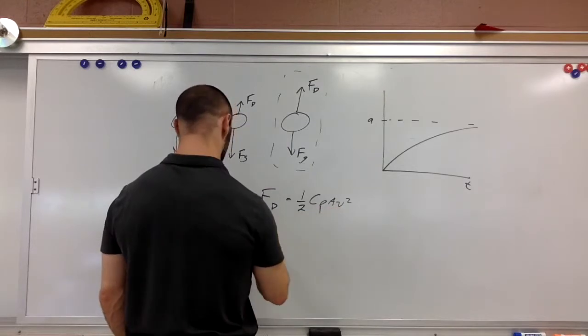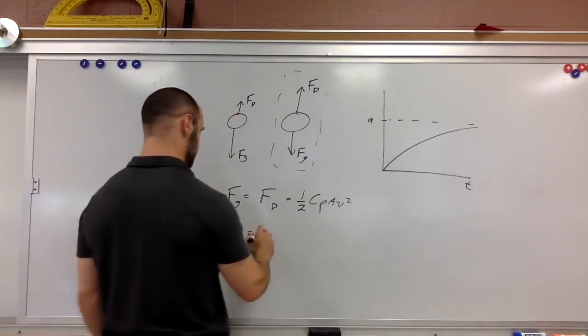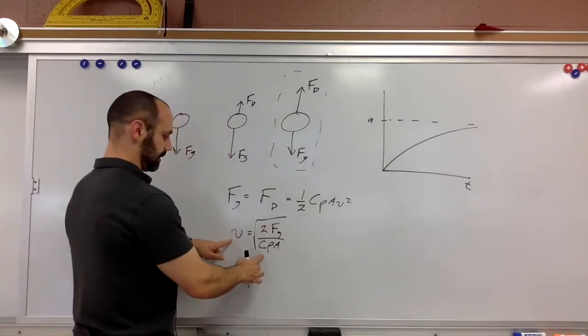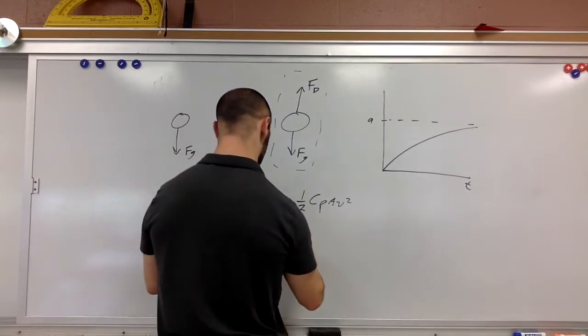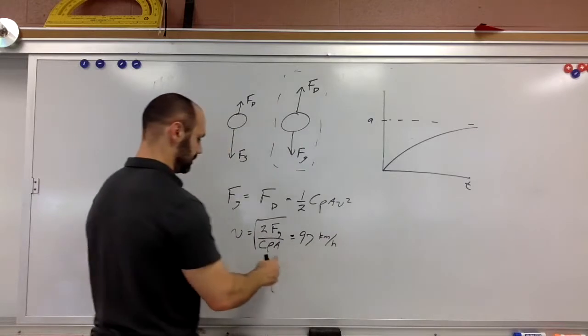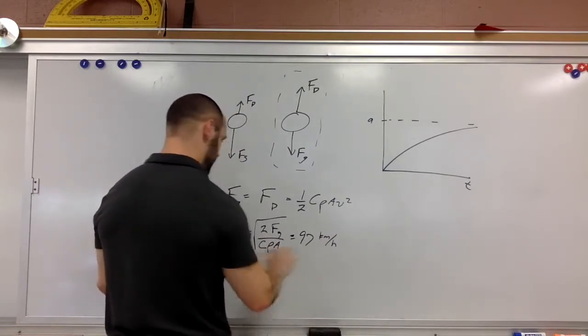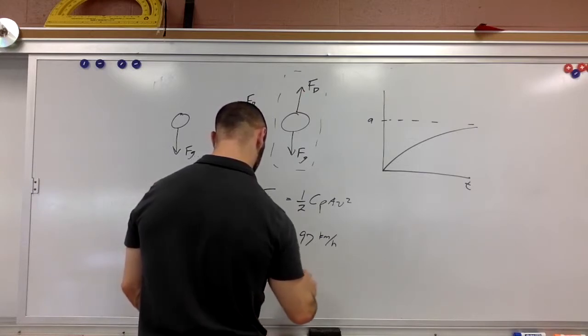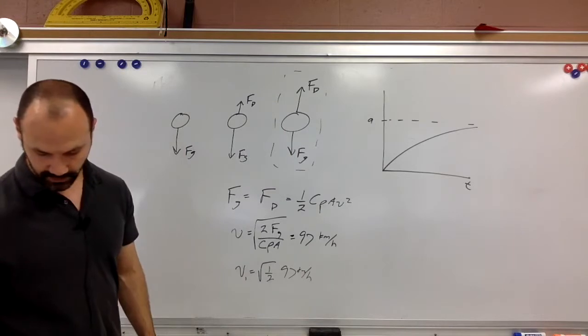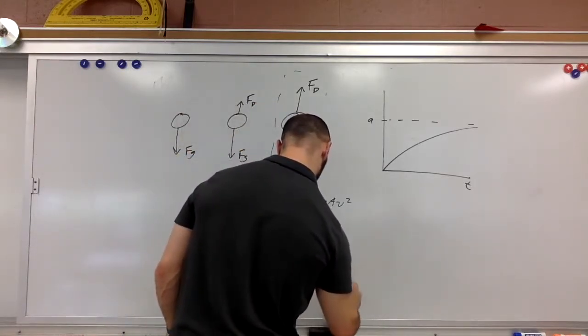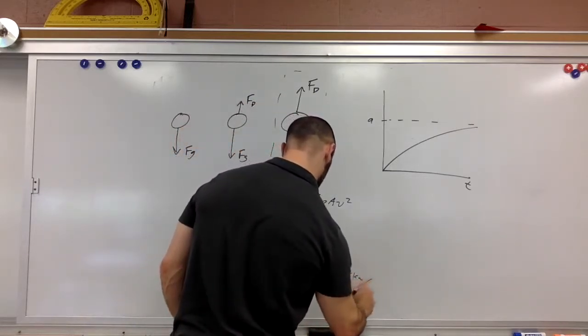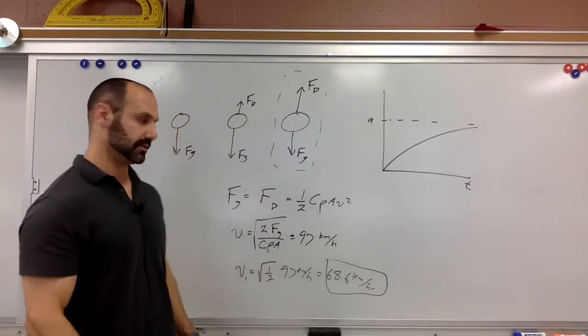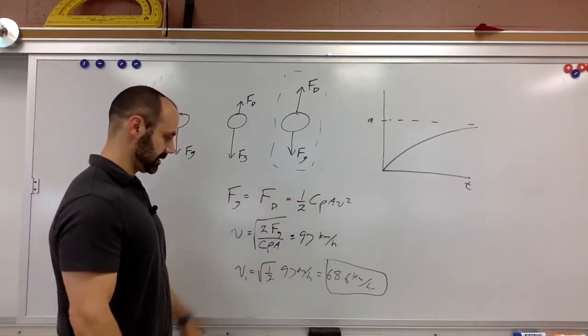And so we have one value for v. So v is equal to the square root of 2 Fg over C rho A. But what I'm doing now is I'm doubling A. This I know is equal to 97 kilometers per hour. But when I double A, that means I'm multiplying this by one over root 2. So 97 times the square root of 1 half is 68.6 kilometers per hour. Okay, don't need to know anything else there. Just knowing how A, the cross-sectional area, is proportional to the velocity which we can solve for from this equation and find.